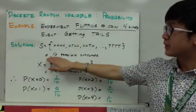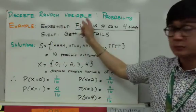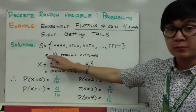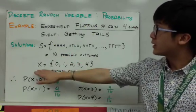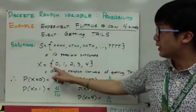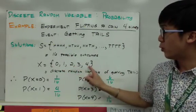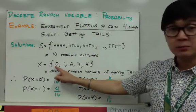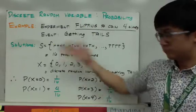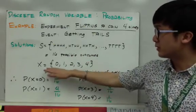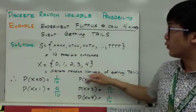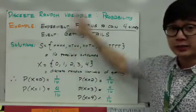However, this 16 is not our discrete random variable — it is just our sample space that we will use in our probability model. The discrete random variables for this experiment, which is getting tails, will be 0, 1, 2, 3, and 4. Zero means the possibility of getting no tails when we flip a coin four times, and so on. These will be our discrete random variables for this experiment.